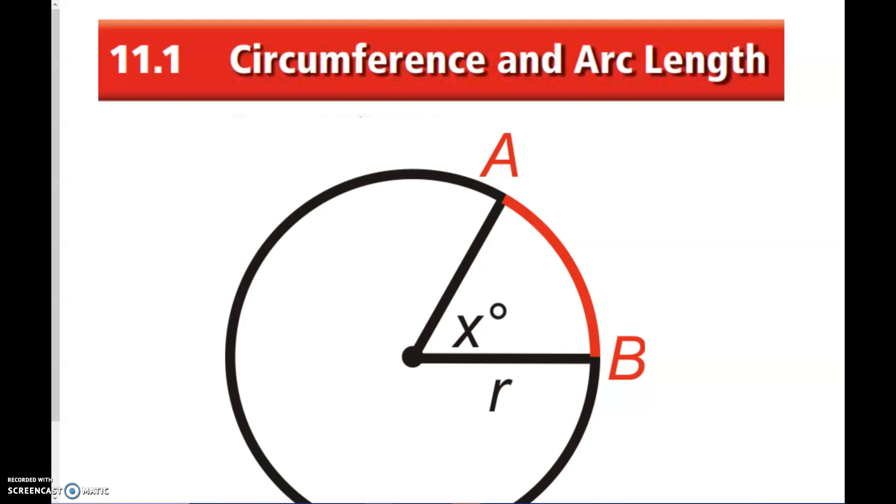So chapter 11 is going to be dealing with circles still and we're going to be getting into some areas and volumes and some different things like that too. Circumference, area, and volume, and we're going to be using polygons and three-dimensional figures and two-dimensional figures. So we're going to be starting with circumference and arc lengths in circles today.